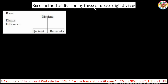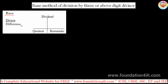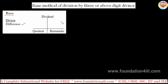This is the base method of division by three or more digit divisors — like division with three, four, five, or any number of digits. We can use the same concept as previous chapters. Briefly, the pattern is the same: first, check what the base is, then the important thing is to count the difference from the base. We need to divide the dividend into two parts.